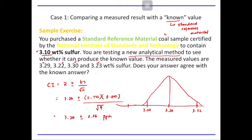The value of the standard reference material is 3.10, and it is outside this acceptable region. Therefore, there is systematic error in the measurement, since the values produced by the new analytical method are statistically different from the standard value of the standard reference material.